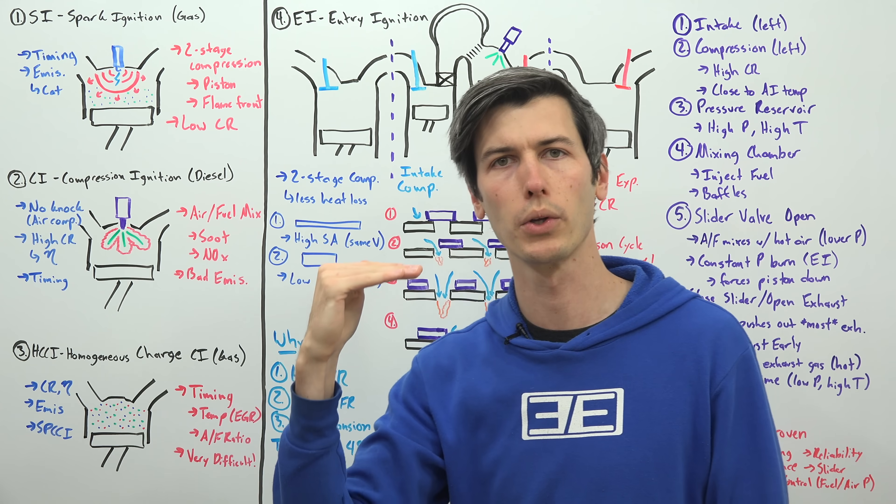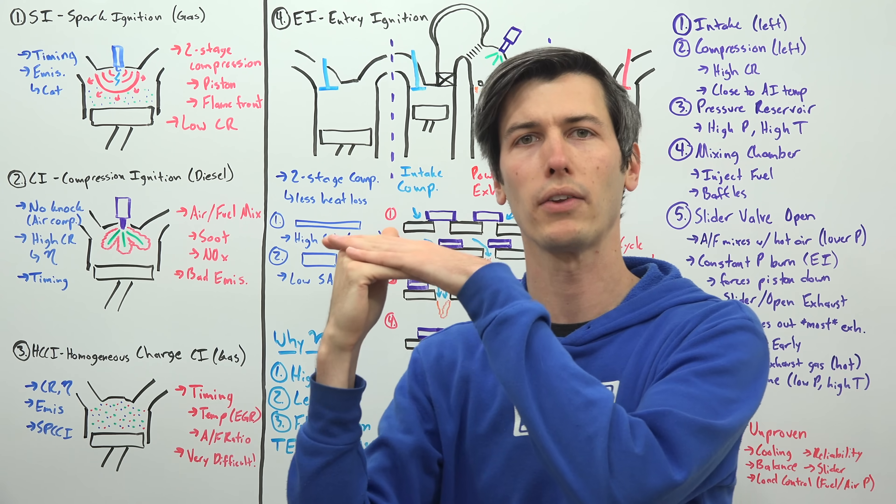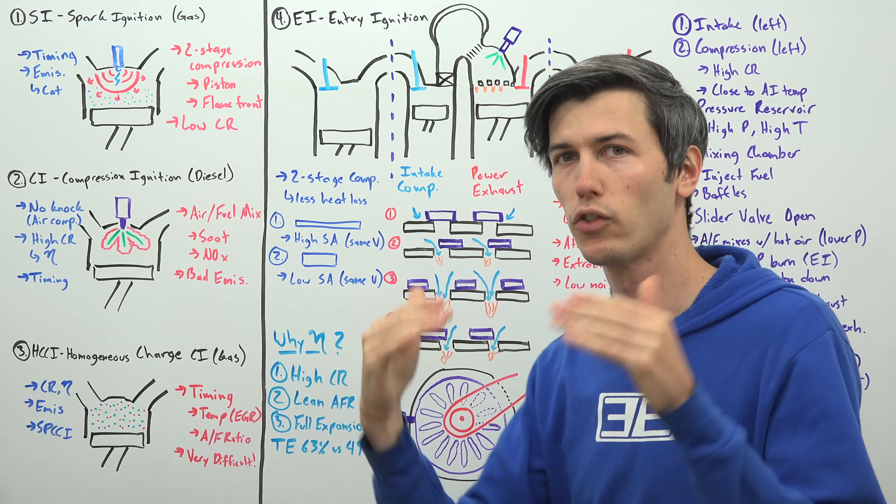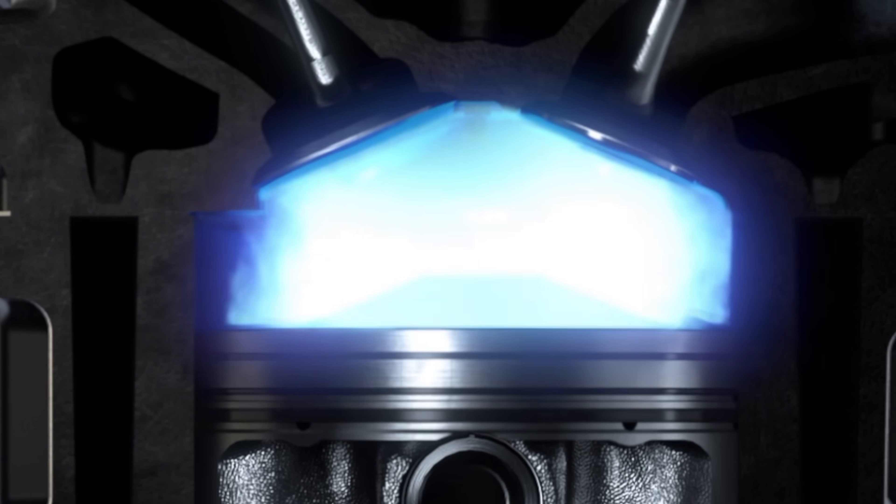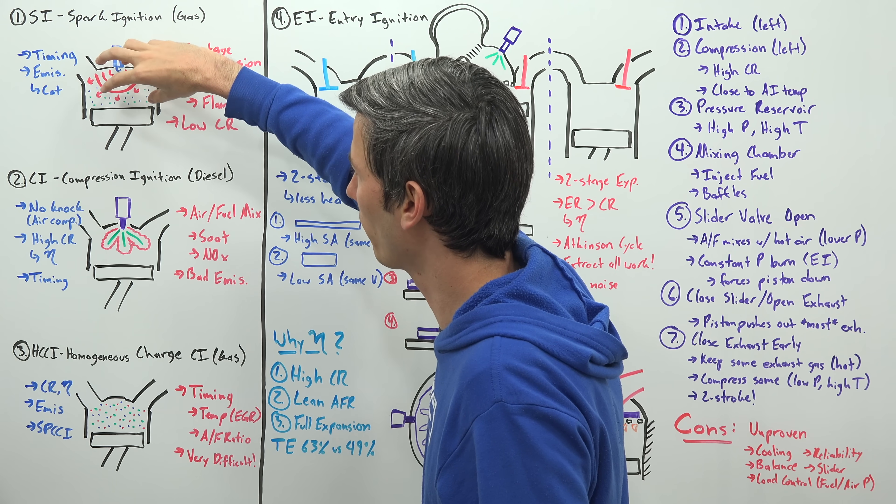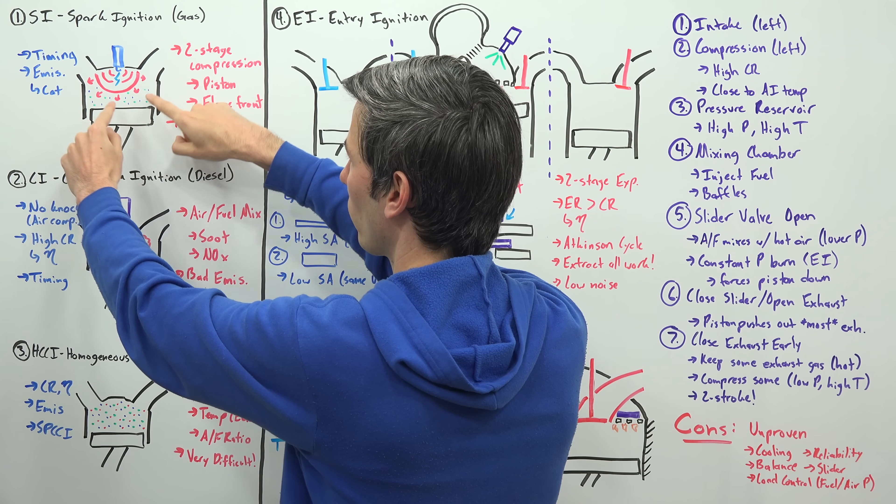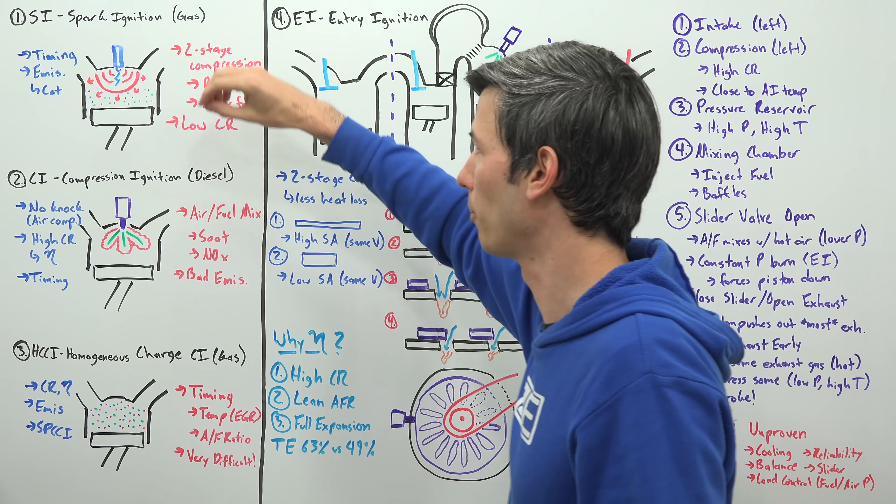You have your compression stroke where you compress that air and fuel and you can only compress it so much because if you compress it too much, it will automatically combust and we don't want that to happen. So we limit its compression ratio. Then we use a spark plug to ignite that air fuel mixture and as that flame travels out from the spark plug and starts burning off that air fuel mixture, it further compresses the remaining and surrounding air and fuel mixture. And so that's the second stage of compression.